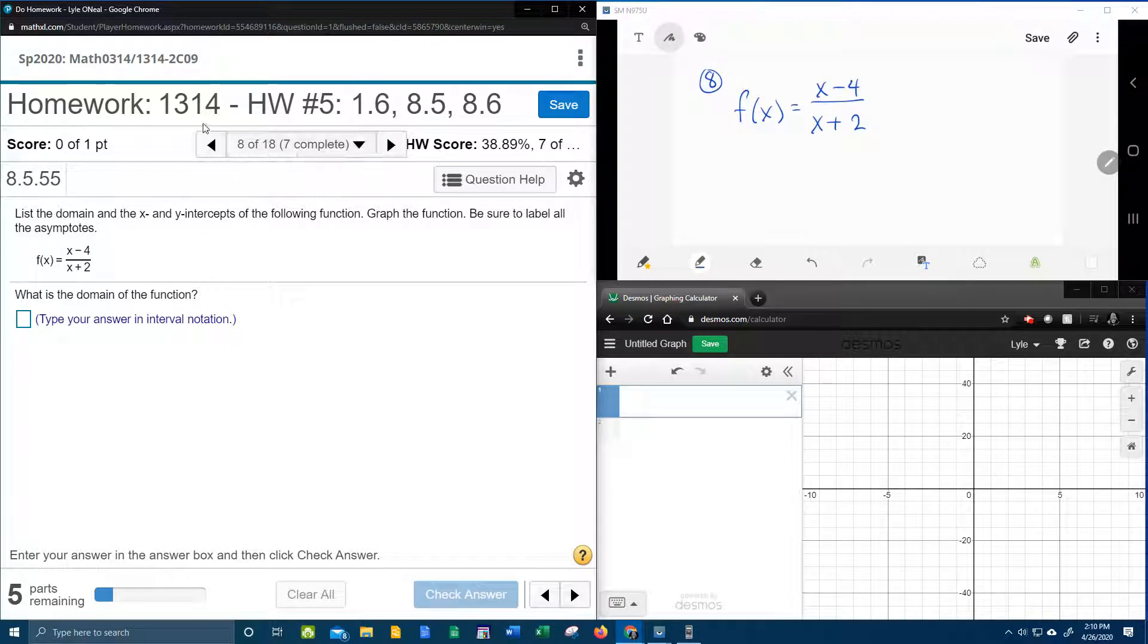Alright here we go, number 8 in our college algebra homework number 5. We have a rational function and they want us to list the domain, the x and y intercepts, graph, and it says be sure to label all asymptotes.